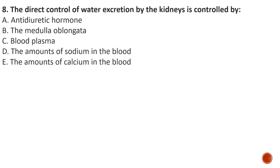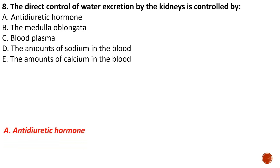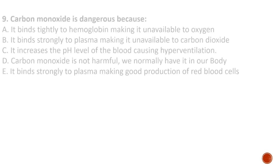Question number eight: the direct control of water excretion by the kidneys is controlled by — A) anti-diuretic hormone, B) the medulla oblongata, C) blood plasma, D) the amount of sodium in blood, E) the amount of calcium in blood. The answer is A — anti-diuretic hormone — which is a hormone produced by the hypothalamus and secreted by the posterior pituitary gland, controlling the amount of water excreted by the kidney.